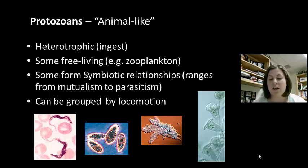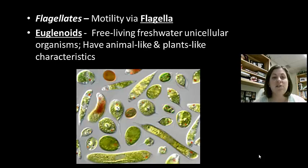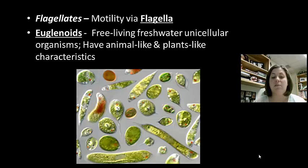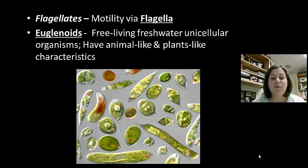Let's start talking about the flagellates first. Flagellates are protozoans that move via flagella — those tail-like extensions that allow them to swim. Euglenoids are the first type of flagellates. They are free-living, freshwater, unicellular organisms, but they display both animal-like and plant-like characteristics.